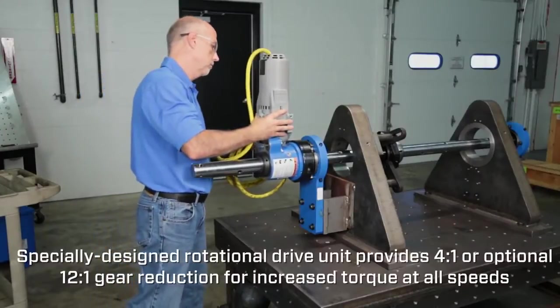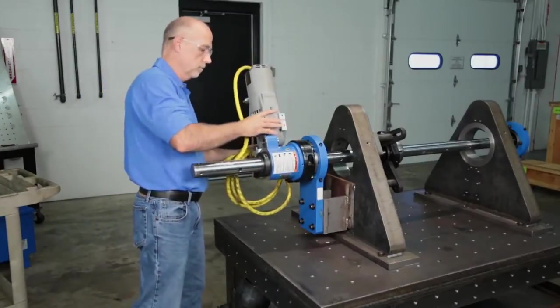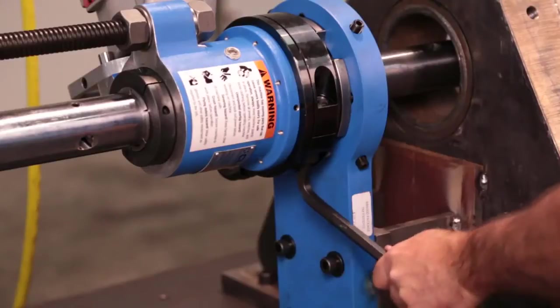Slide the rotational drive onto the bar. Firmly push it onto the spherical mount and lock it in place.